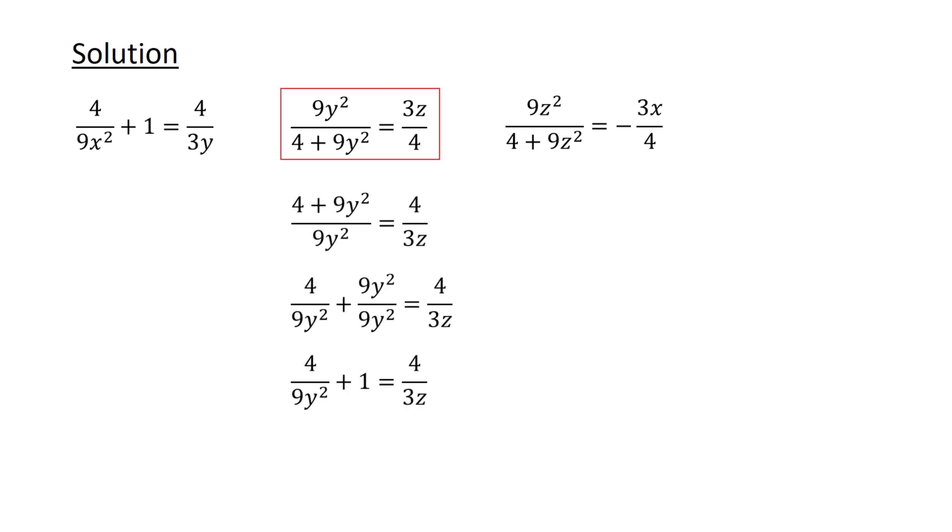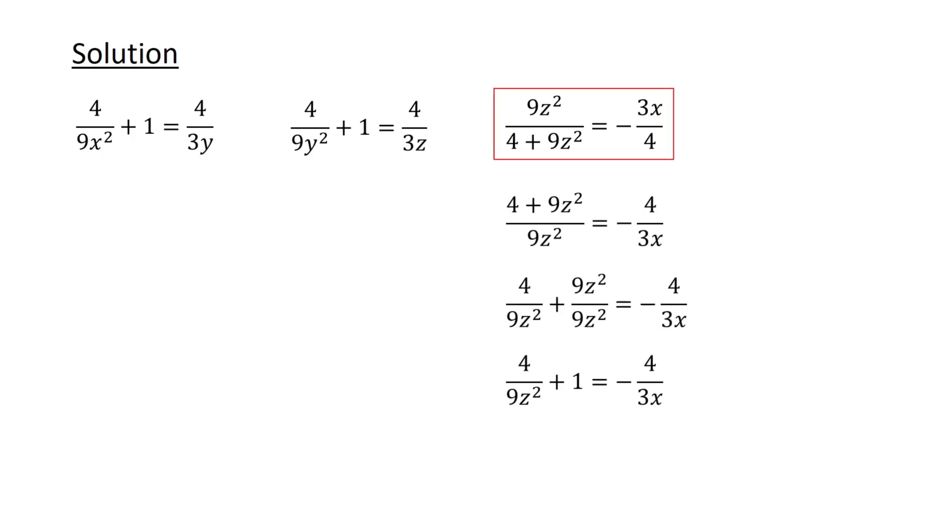Repeating the process for the second term, we get 4 over 9y² plus 1 is equal to 4 over 3z. And similarly for the third equation, to get 4 over 9z² plus 1 is equal to minus 4 over 3x.